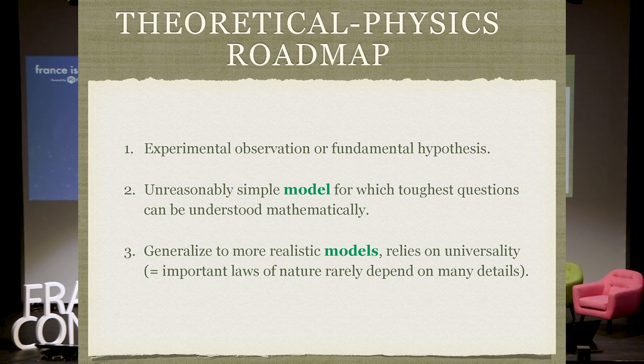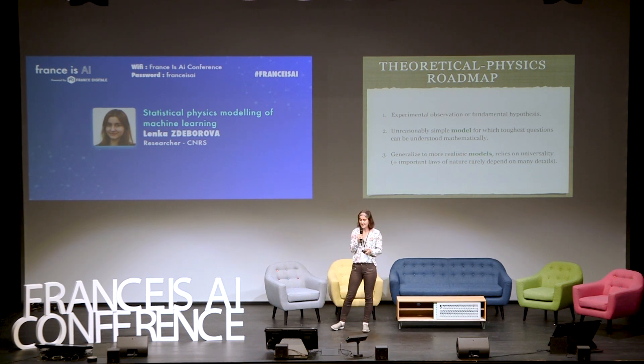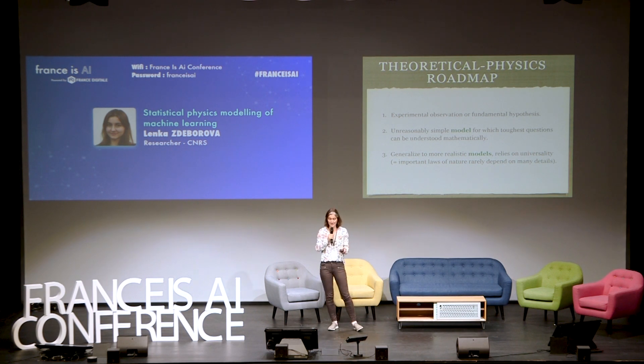First, we have some experimental observation or fundamental hypothesis. Nowadays in deep learning, we have a lot of empirical observations of what's going on and what are the things we want to explain — so step one we could consider done. Then in physics, what we do is we take a simple model, an often unreasonably simple model — that's not a typo, really unreasonably simple — and then we work on that model. Even the toughest questions we have, we understand to death on that simple model. And only once that is done, then we go and say: is that model realistic enough? Should we generalize it or not? What we see in there, is it universal in the sense that maybe the laws of physics do not depend on all possible details — they usually depend only on some of the details. Finding which ones and what are the good models, that's kind of the art.